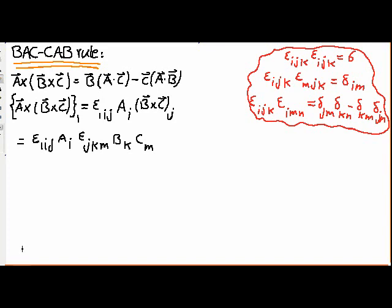Now I'm going to use this third identity in our expression. To do so, I first need to bring j to the front. Swapping any two indices in the Levi-Civita symbol introduces a negative sign, so epsilon_{1ij} equals minus epsilon_{i1j} and swapping again gives epsilon_{j1i}. So I rewrite epsilon_{1ij} as epsilon_{j1i}.